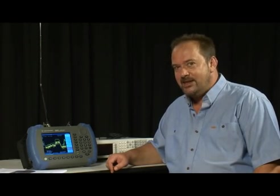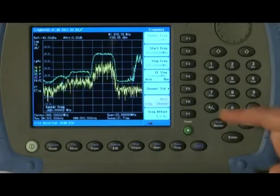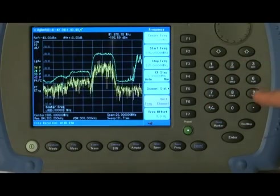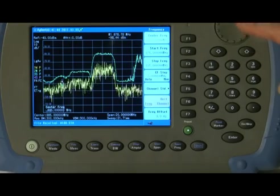As with most Agilent instruments, there are three ways of adjusting a value, using the numeric keypad, the up-down arrow keys, or by turning the knob.